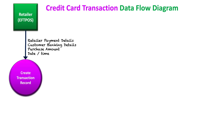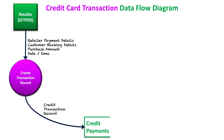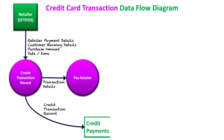Starting again with the retailer, they send through the customer's banking details, the purchase amount, and the date and time. This information is used to create a transaction record, which is stored in the credit payments transaction file — all credit payment transactions are stored in this data store. The next process is to pay the retailer, with funds sent from the bank's own reserve. That payment is made in real-time, the customer has paid for their goods, and they can leave the retailer with their receipt.